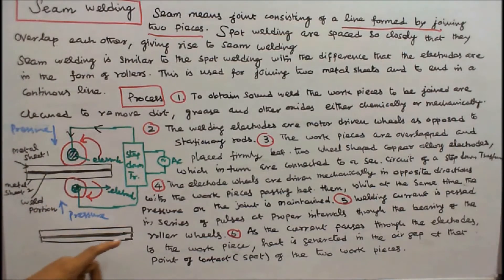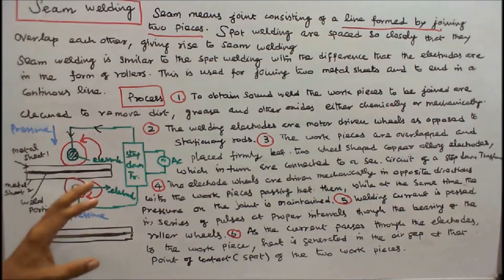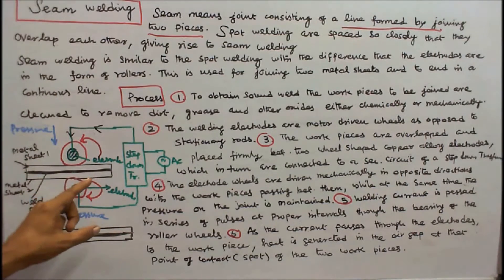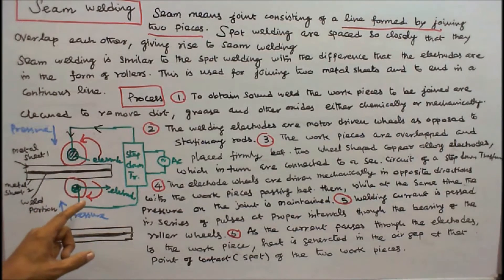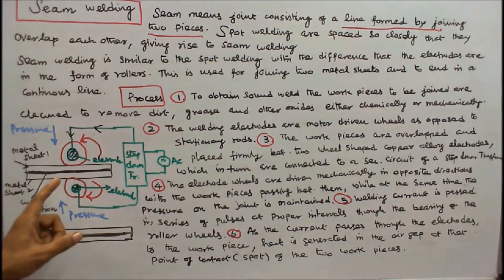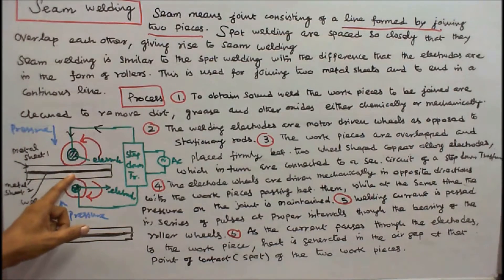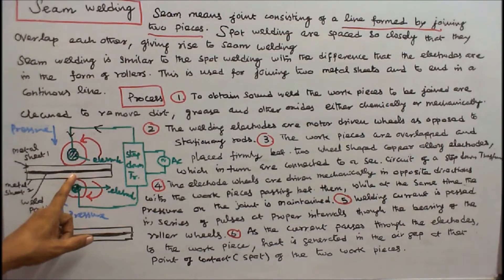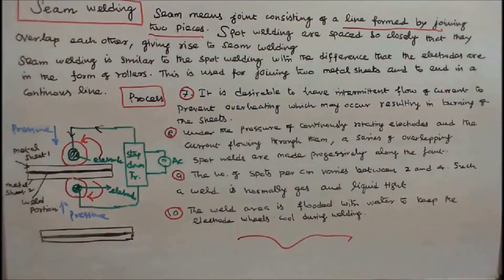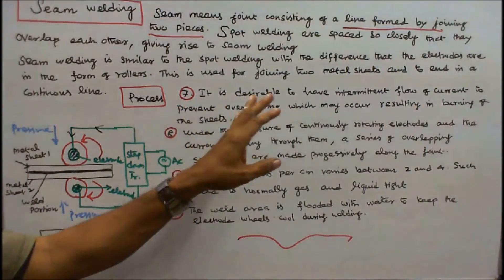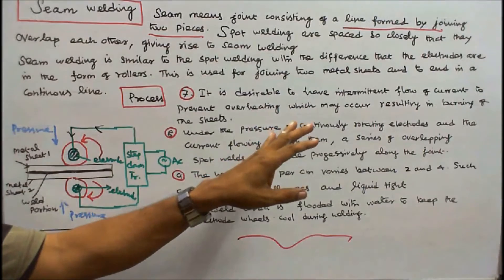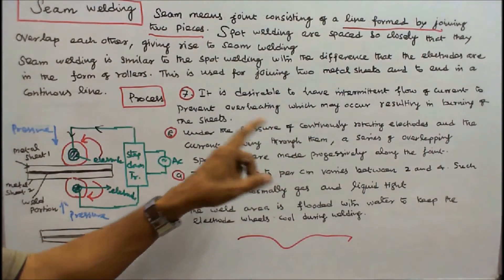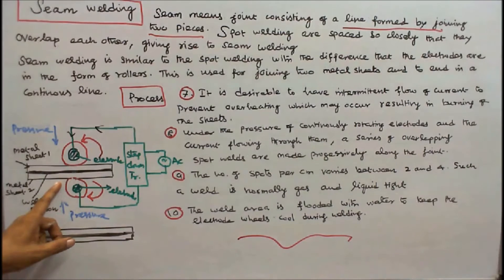Number 5: Welding current is passed in a series of pulses at proper intervals through the bearing of the roller wheels. Number 6: As the current passes through the electrodes to the workpiece, heat is generated in the air gap at the point of contact of the two workpieces. Number 7: It is desirable to have intermittent flow of current to prevent overheating, which may result in burning of the sheets.